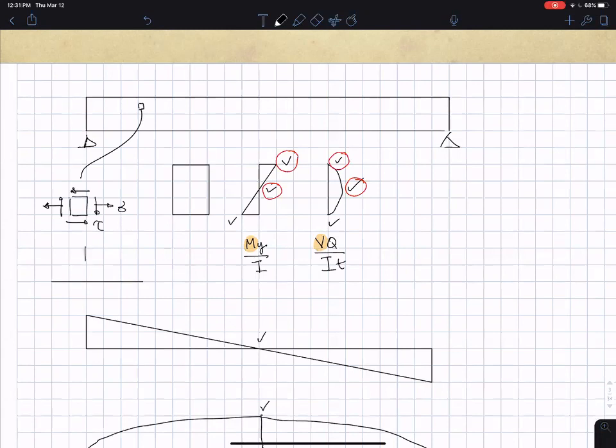If you draw a Mohr circle for that, you would have something like this. You could find the maximum and minimum normal stresses.